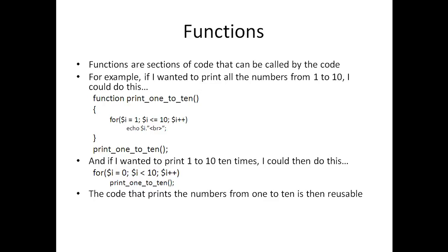For example, if I wanted to print all the numbers from one to ten, I could create a function called print_one_to_ten, then put a for loop inside: for i equals one, do while i is less than or equal to ten, i plus plus, and echo i with a break. Then at the bottom, underneath that closing brace, I have print_one_to_ten, which is the function call.